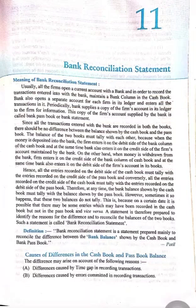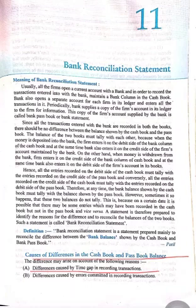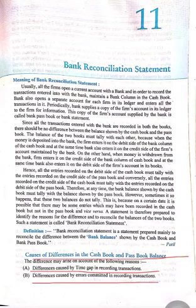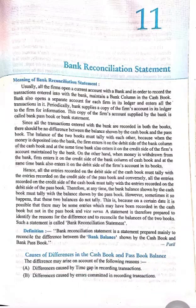Now the causes of differences in cash book and pass book balance. First: differences caused by time gap in recording transactions — for example, if we have given a cheque to Mr. A today and Mr. A has forgotten to deposit that cheque in the bank account. Second: differences caused by errors — for example, we issued a cheque of ten thousand but by mistake wrote it as only one thousand.